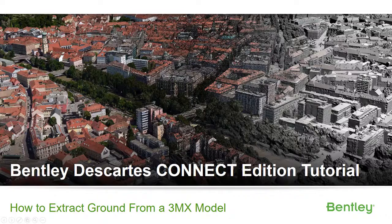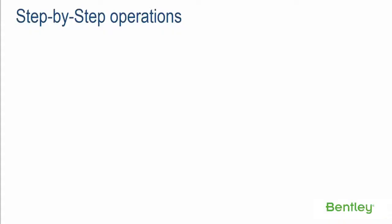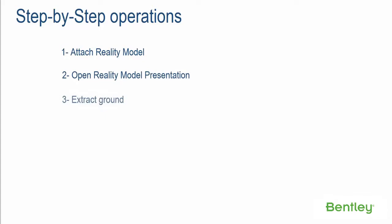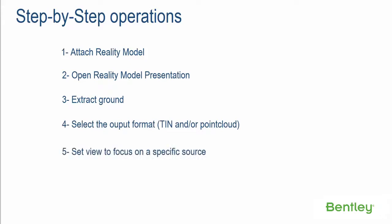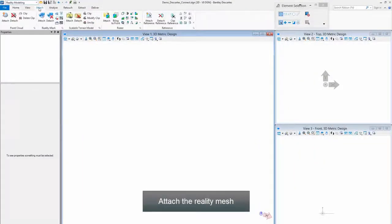Bentley Descartes Connect Edition Tutorial: How to Extract Ground from a 3MX Model. Step-by-step operations: Step 1, Attach Reality Model; Step 2, Open Reality Model Presentation; Step 3, Extract Ground; Step 4, Select the Output Format; Step 5, Set View to Focus on a Specific Source; Step 6, Manage, Modify, Export Ground Features. Attach the Reality Mesh.